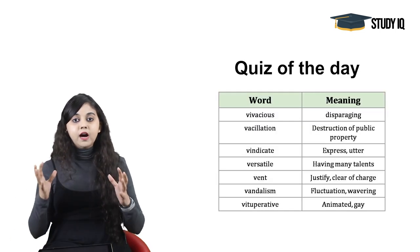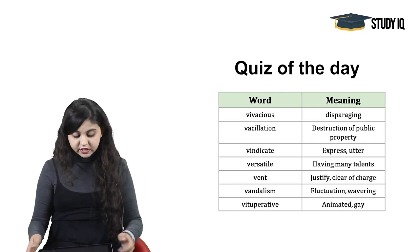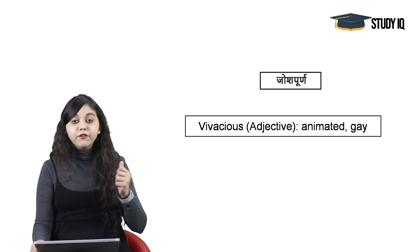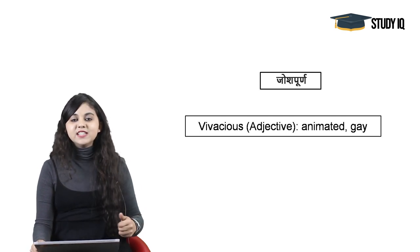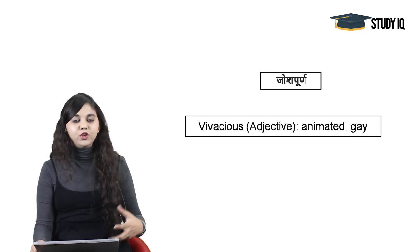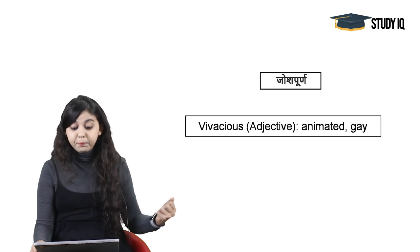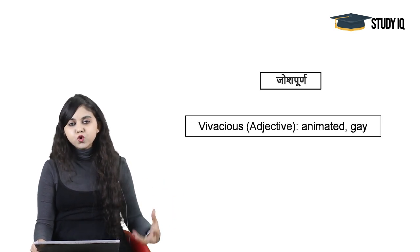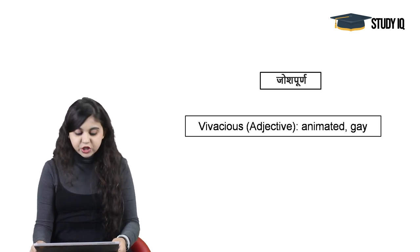Moving on to the quiz of the day — yahan aap video ko pause karke aaj ke quiz of the day ko solve kar sakte hain. Starting in quick succession: Vivacious — this adjective means aisi cheez jo animated hai, bahut excited hai. A vivacious person is always animated, happy, enthusiastic — bahut joshile rehte hain, joshpoorn rehte hain. That is when we use the word vivacious.